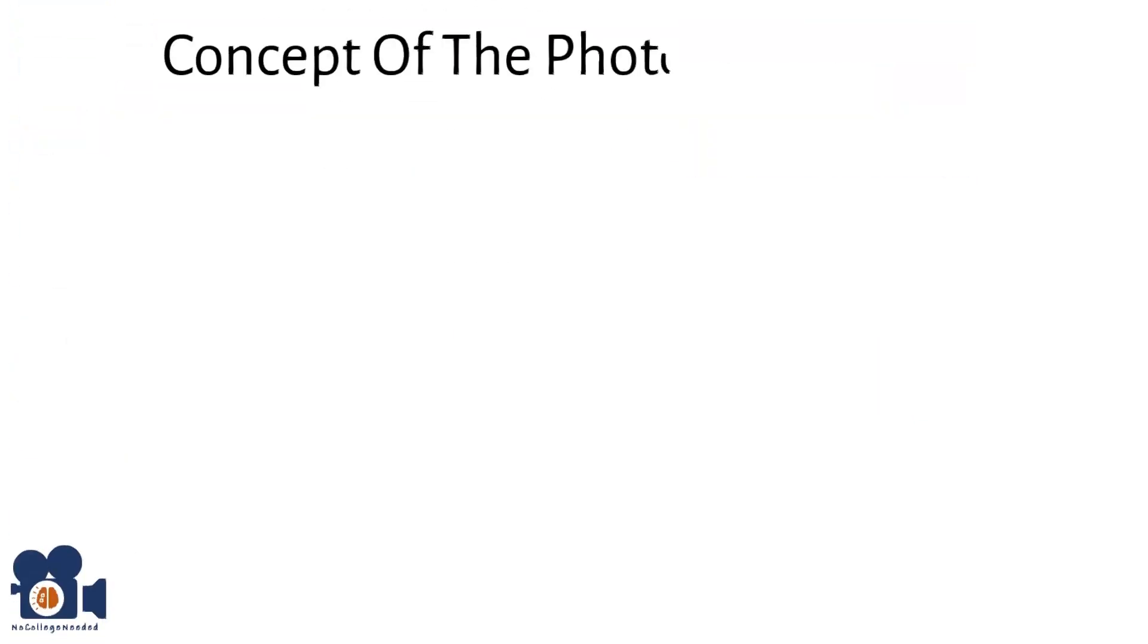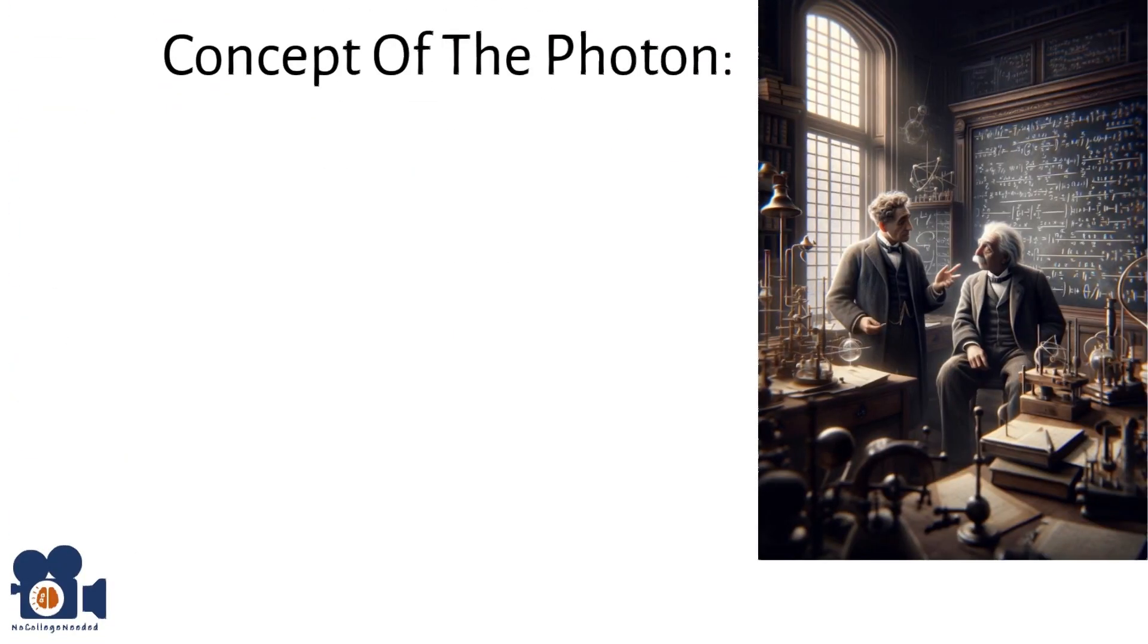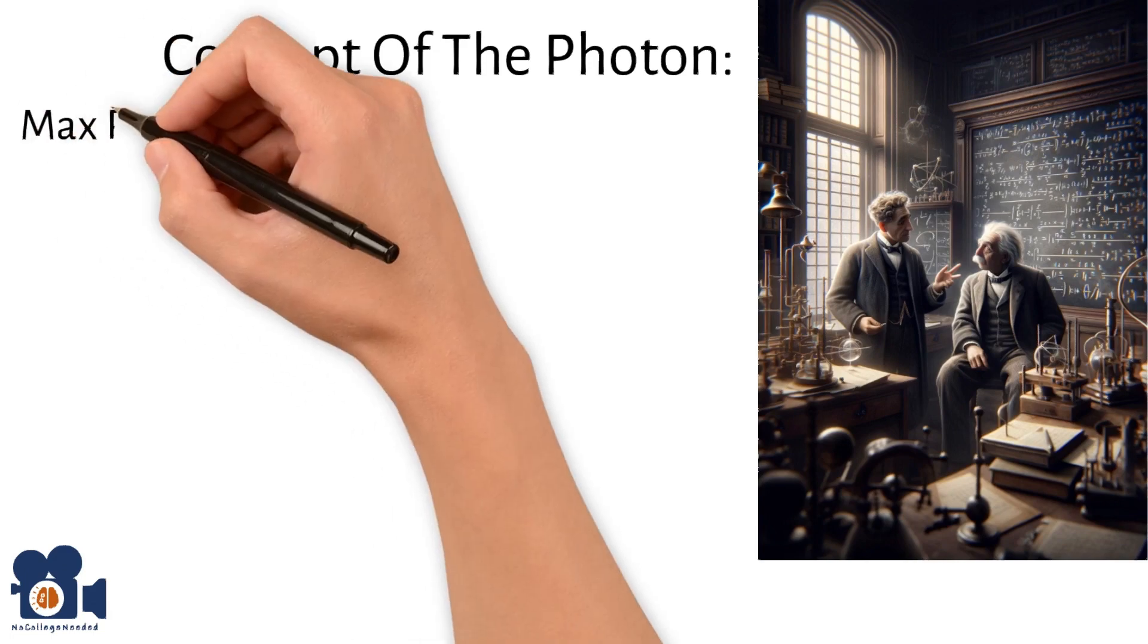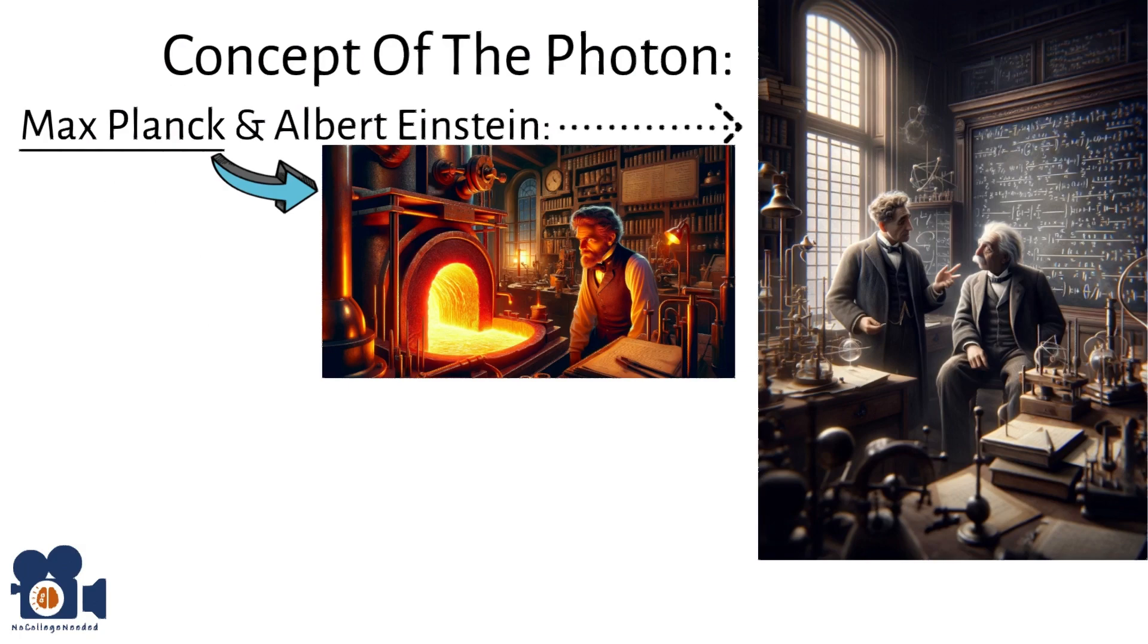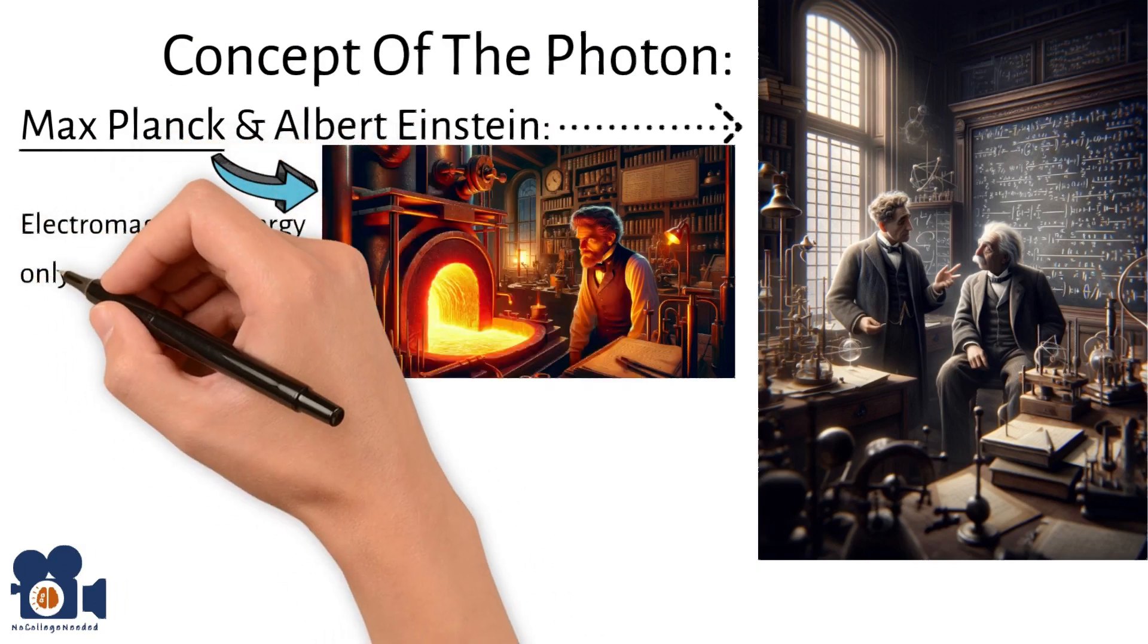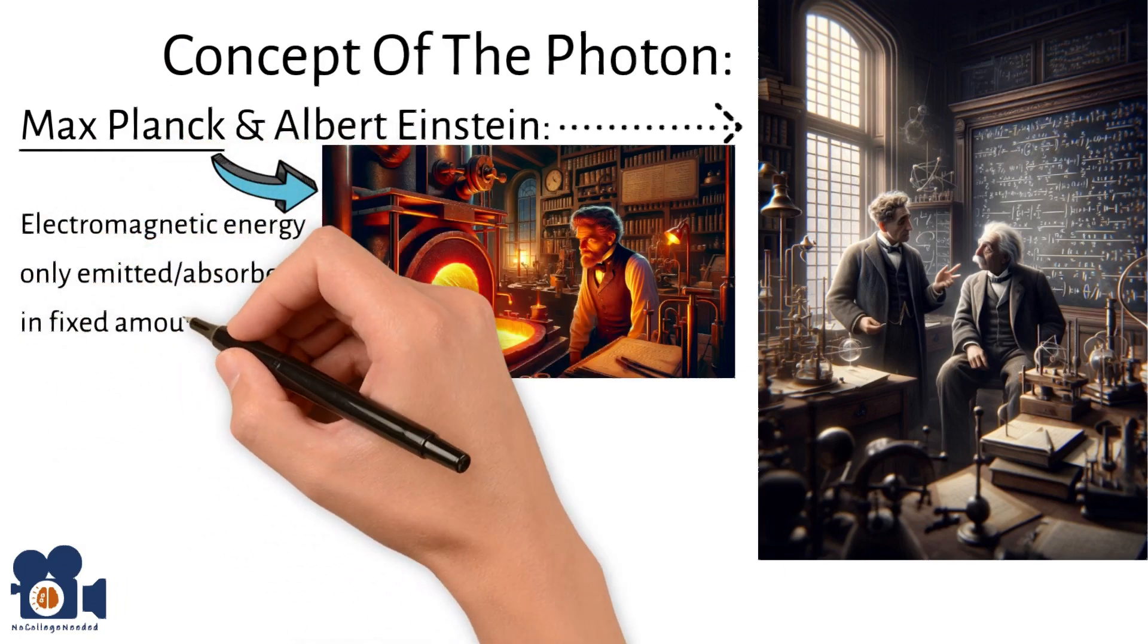The concept of the photon was developed in the early 20th century by scientists like Max Planck and Albert Einstein. After studying the glow of heated metal, Planck suggested that electromagnetic energy could only be emitted or absorbed in fixed amounts or quantities.